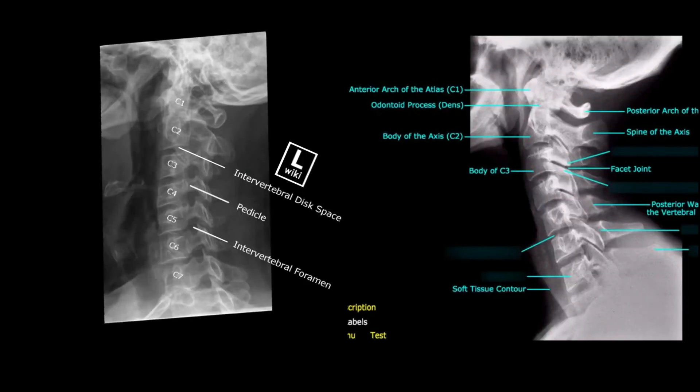When you're given a question on what is best visualized on a posterior oblique with the C-spine, bring yourself back to lab and clinical. Visualize that C-spine oblique x-ray on the screen in front of you. You definitely see those intervertebral foramina on the obliques. On the lateral, do you see any intervertebral foramina? You only see the zygapophyseal joints.